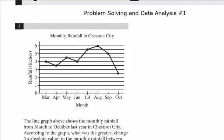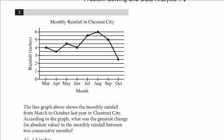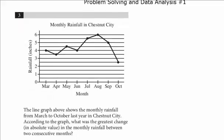So let's look at question three. We know the difficulty level has reset. The line graph above shows the monthly rainfall from March to October last year in Chestnut City. According to the graph, what was the greatest change in absolute value in the monthly rainfall between two consecutive months? All we want is the greatest change in absolute value. If you just look at this, it's really where there's the biggest gap. So here to there is the biggest change.